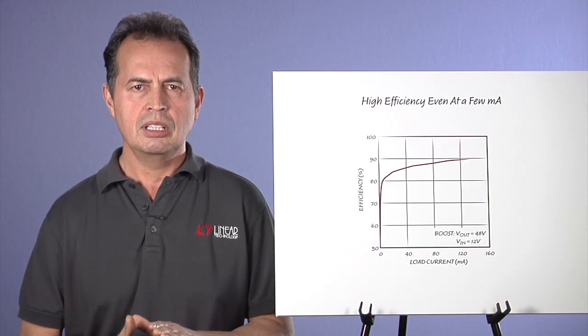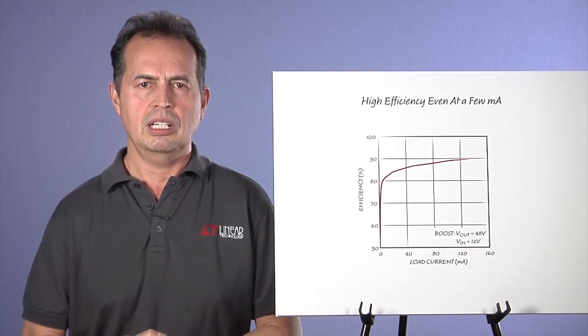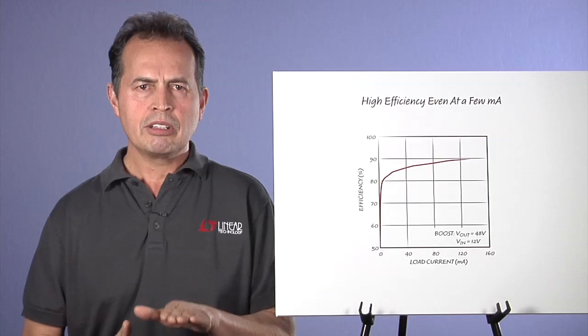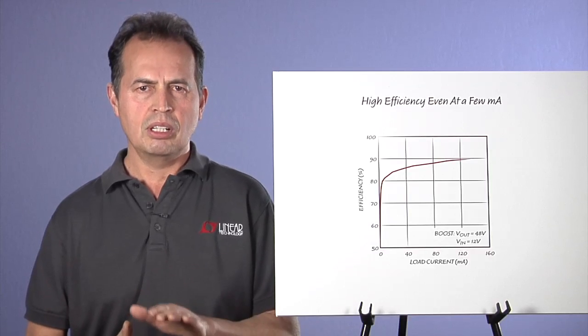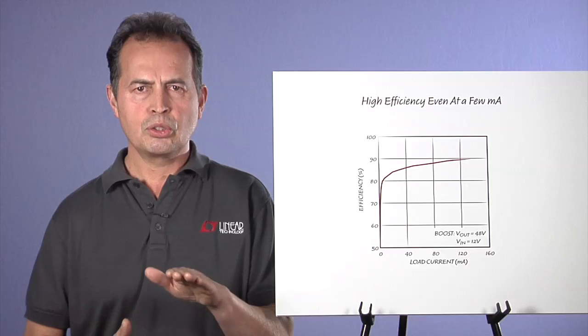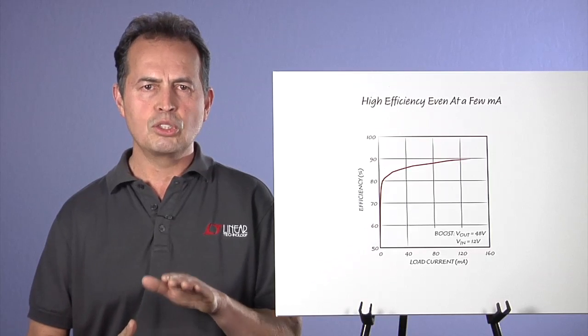When it comes to efficiency, the emphasis is usually on reducing power loss at full load. However, in today's world, reducing power loss is critical at any load level, including standby mode. With the converter turned off, it must not drain the source, especially if the source is a battery.